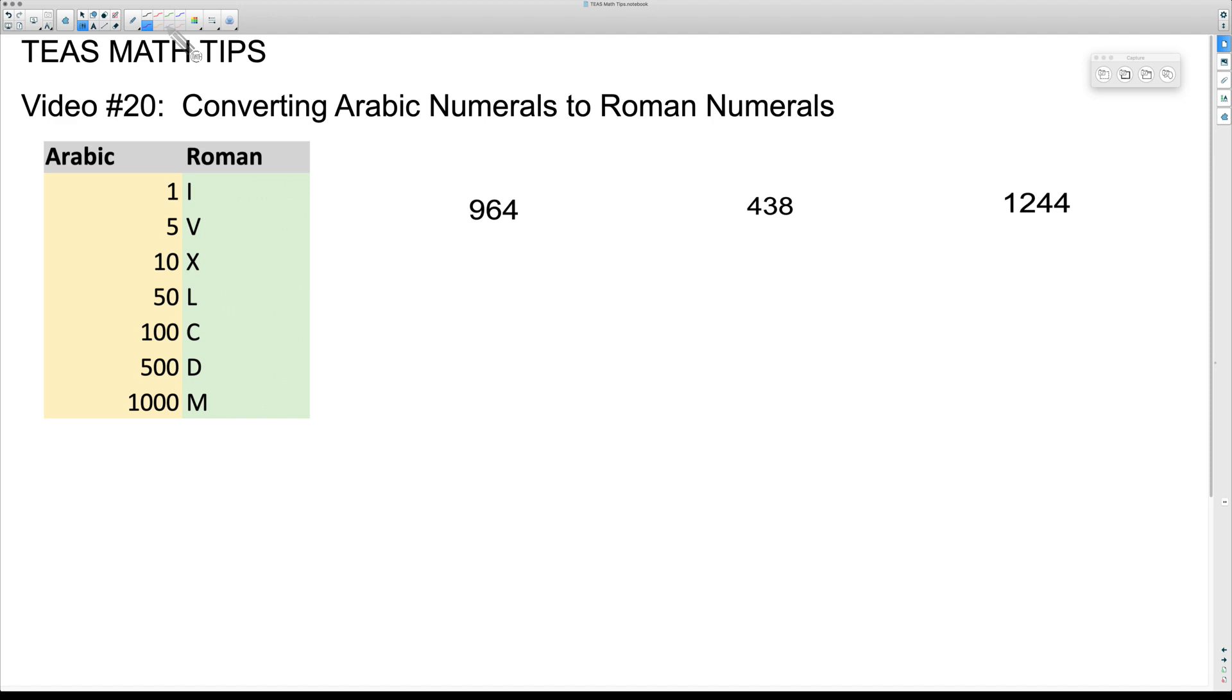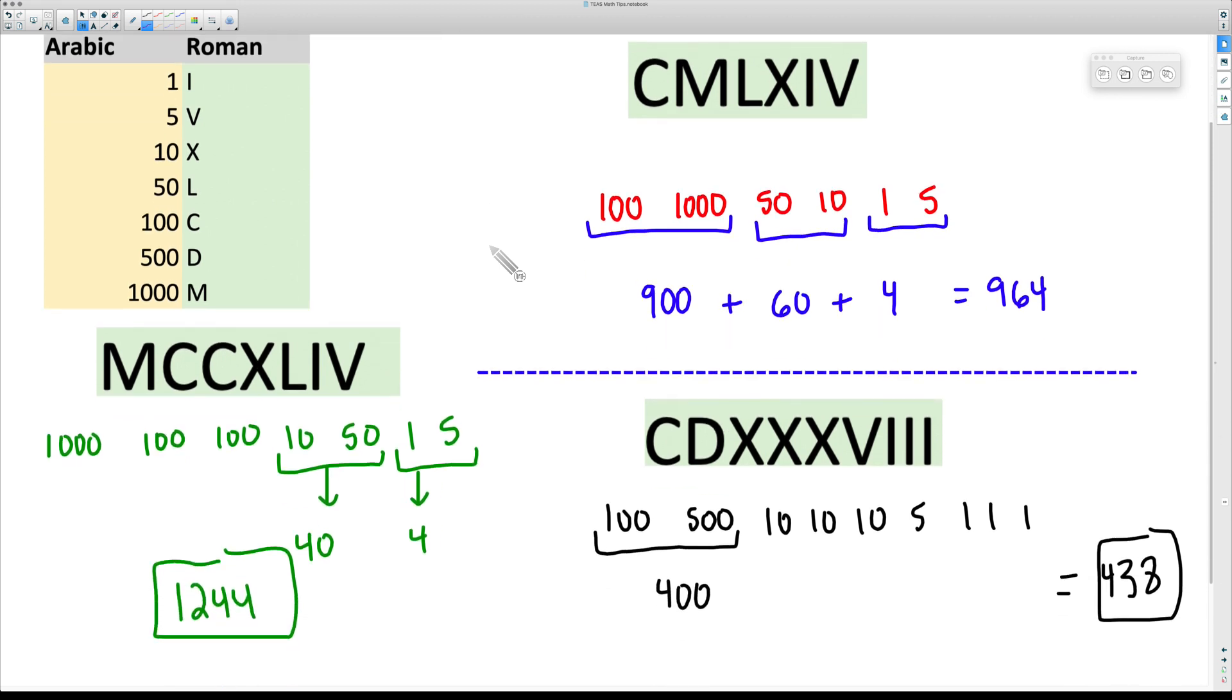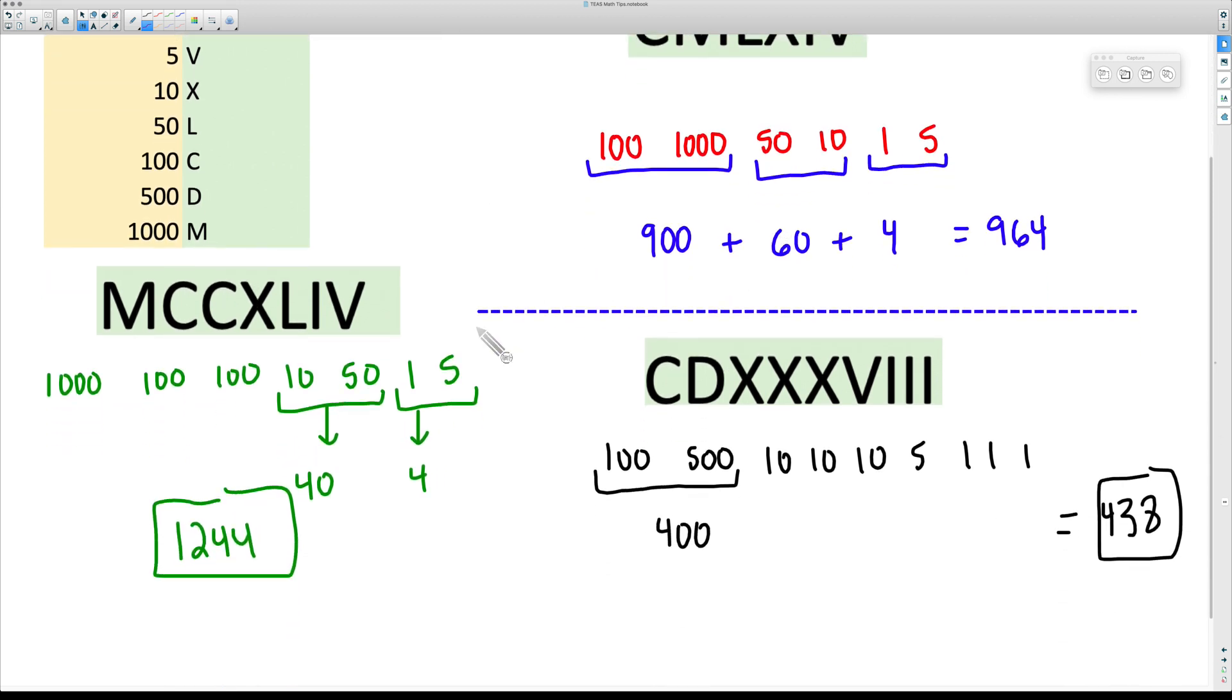All right, in this video, this is video number 20 of TEAS Math Tips, and we're going to convert some Arabic numerals to Roman numerals. Arabic numerals are these three numbers here, numbers we're used to all the time. If you watch video number 19, it actually led to those same exact answers, but now what we want to do here is go backwards.